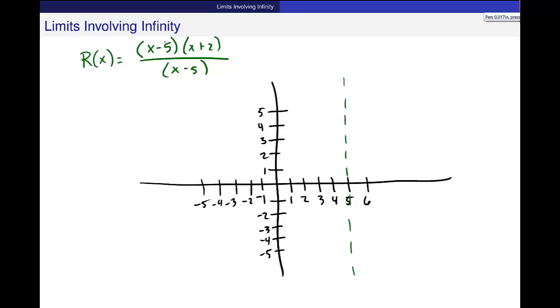at every single other point, this part of the function, x minus 5 over x minus 5, is equal to 1 at every single other point.